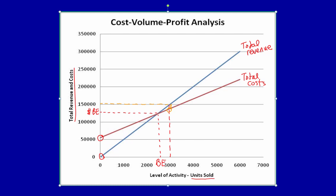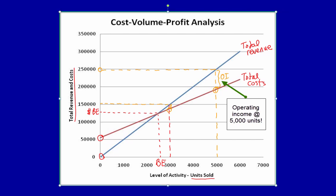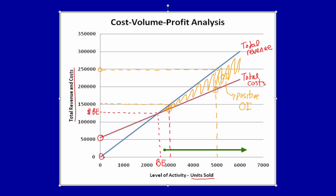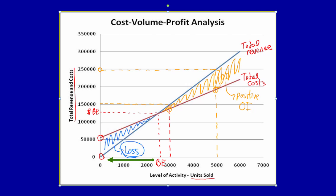If we sell 5,000 units, the space between the total revenue line and the total cost line equals the operating income earned at that level. Any number of units sold above the break-even point will always generate a positive operating income. Conversely, any sales volume below the break-even point would indicate the company is losing money, because the red line indicating total costs is higher than the blue line indicating total revenue.